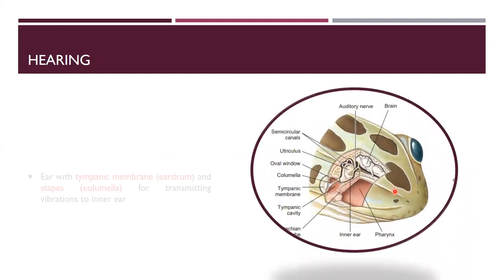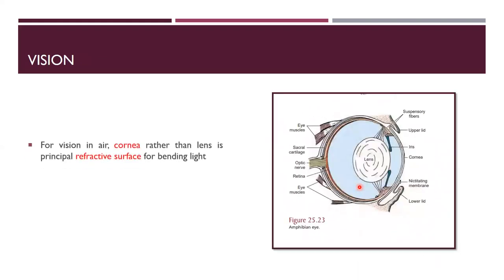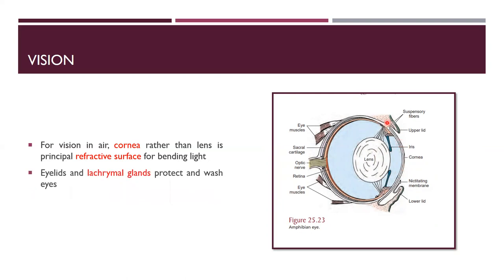For hearing, the ear has a tympanic membrane (eardrum) and stapes, also called the columella, for transmitting vibrations to the inner ear. For vision, the cornea rather than the lens is the principal refractive surface for bending light in air — unlike mammals where the lens provides the refractive surface. Eyelids and lacrimal glands are present; lacrimal gland secretions protect and wash the eyes.